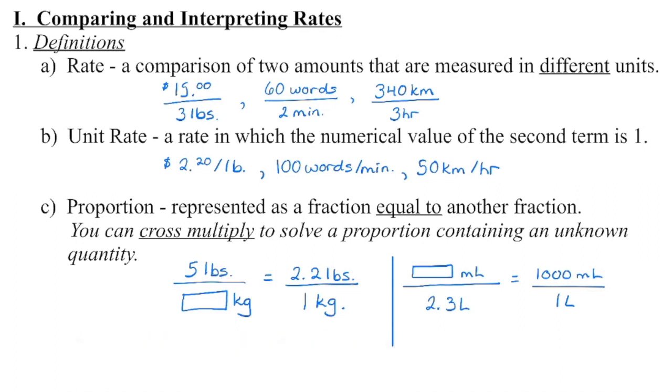If we know how many pounds are in a kilogram, for example, we can use that information to help us solve for a missing amount. Likewise, if we know that there are 1,000 milliliters in a liter, we can use that information to help us solve for how many milliliters would be in a 2.3 liter container.